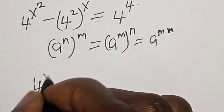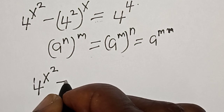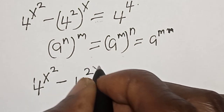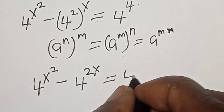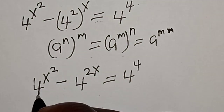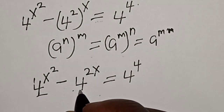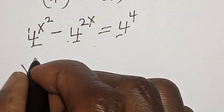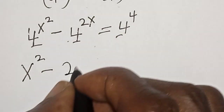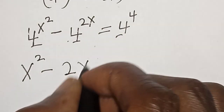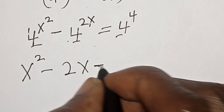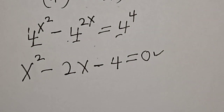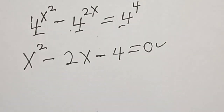So we have 4 raised to power s squared minus 4 raised to power 2s is equal to 4 raised to power 4. We have the same base, so the exponents must be equal: s squared minus 2s minus 4 is equal to 0. This is a quadratic equation, so let's solve it.